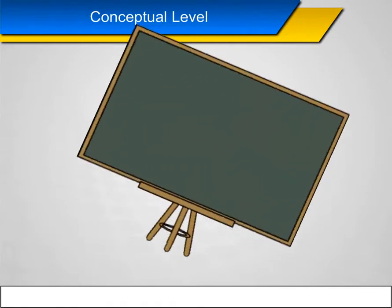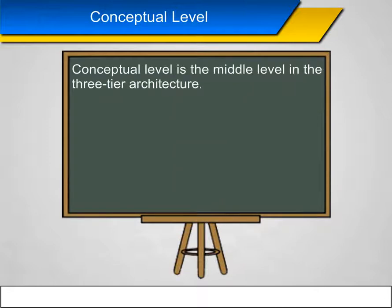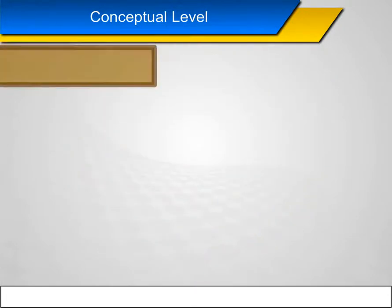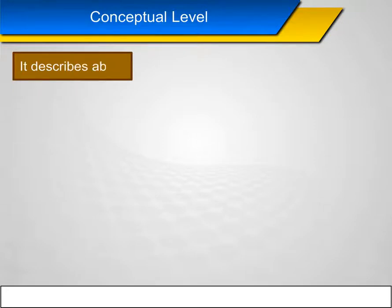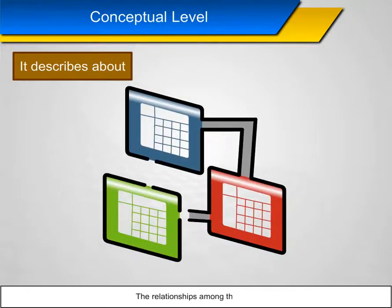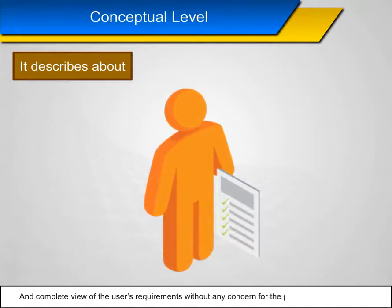Conceptual level: The conceptual level is the middle level in the three-tier architecture. It is also known as the logical level because it deals with the logical structure of the entire database. It describes the data stored in the database, the relationships among the data, and a complete view of the user's requirements without any concern for the physical implementation.